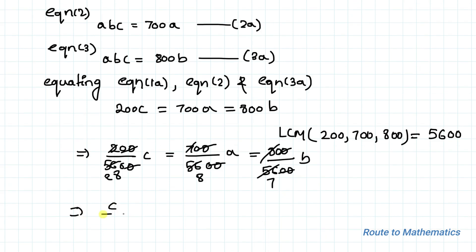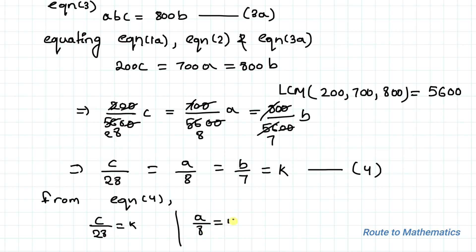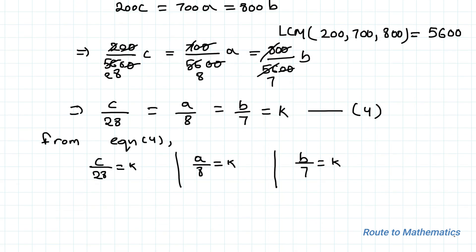So we have c/28 = a/8 = b/7. Let's set all these ratios equal to a constant k — call this equation 4. From equation 4: c/28 = k implies c = 28k; a/8 = k implies a = 8k; and b/7 = k implies b = 7k.